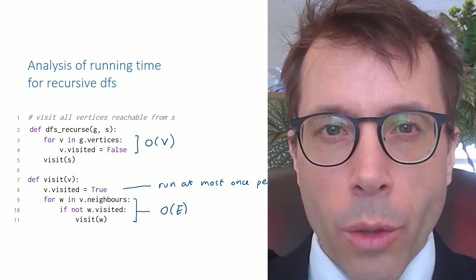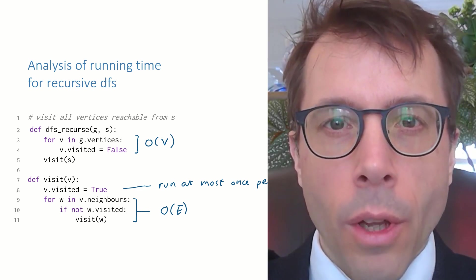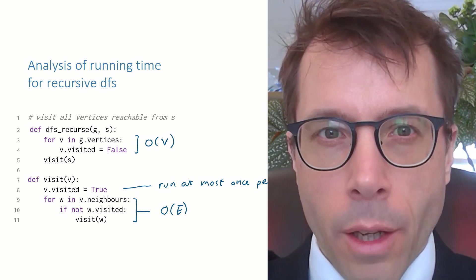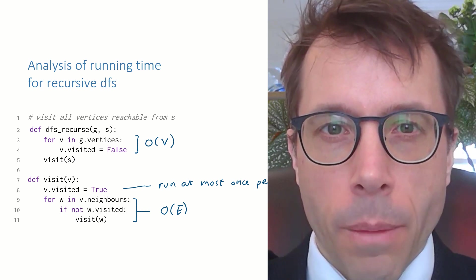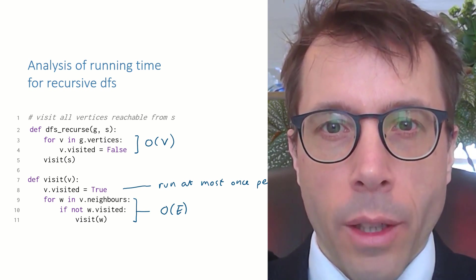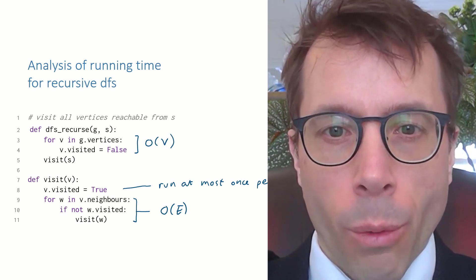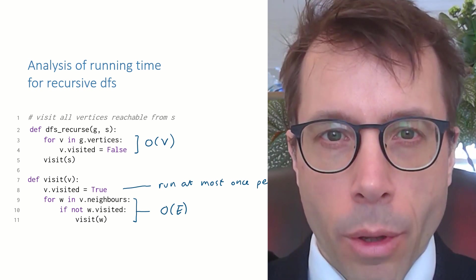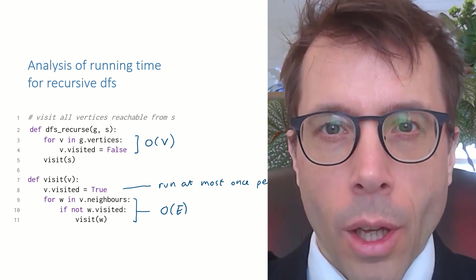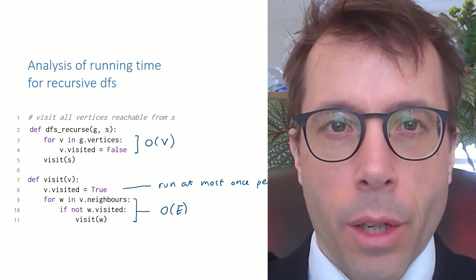The clever thing we're doing in this analysis is we're not trying to find out how long each individual call to visit will take. That would be some horrible recursive formula. Instead, we're counting the total number of times we hit line 8, for example, over a run of the entire algorithm. This sort of trick is called aggregate analysis, and we're going to see a lot more of it in the final part of this course.